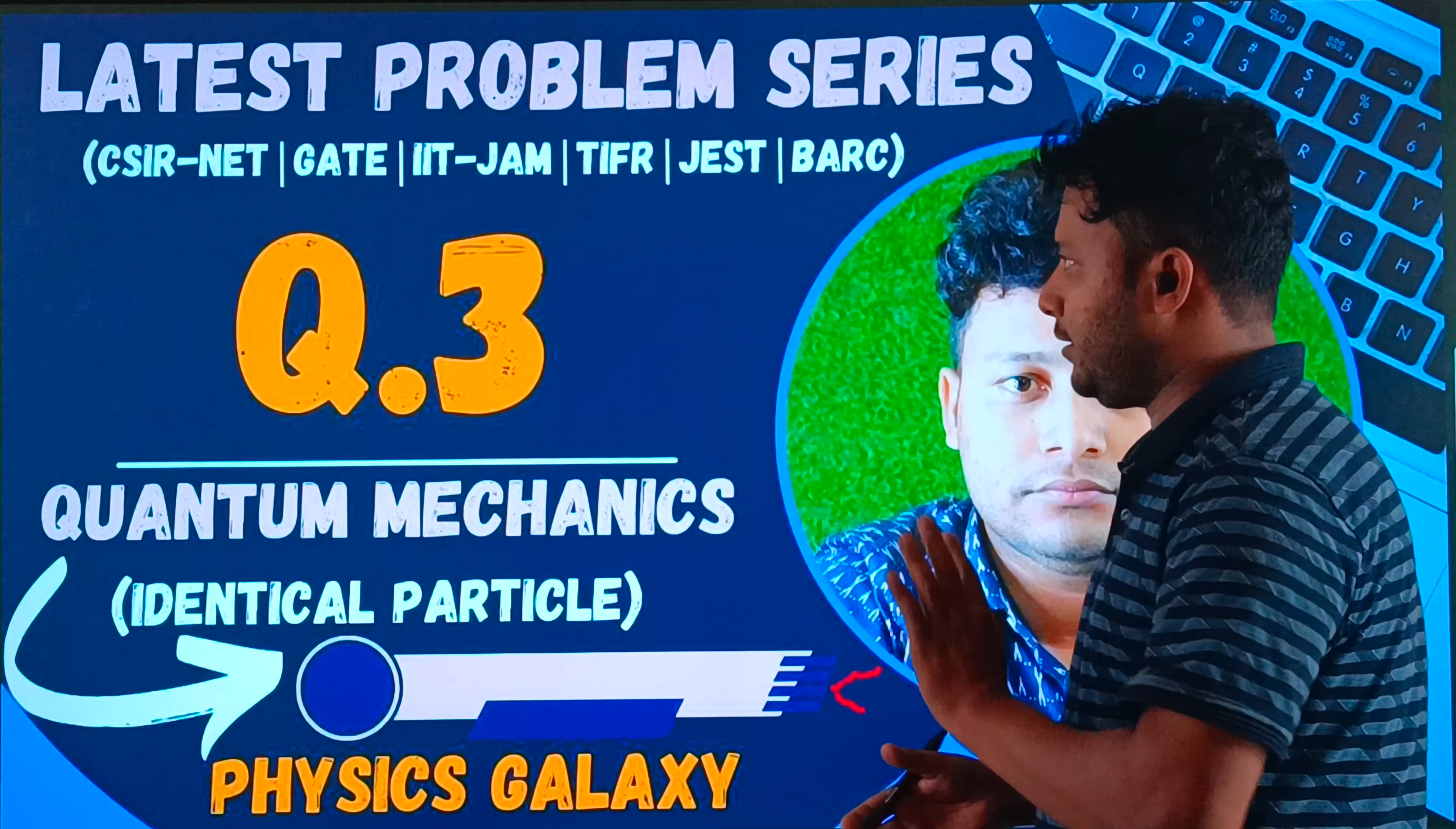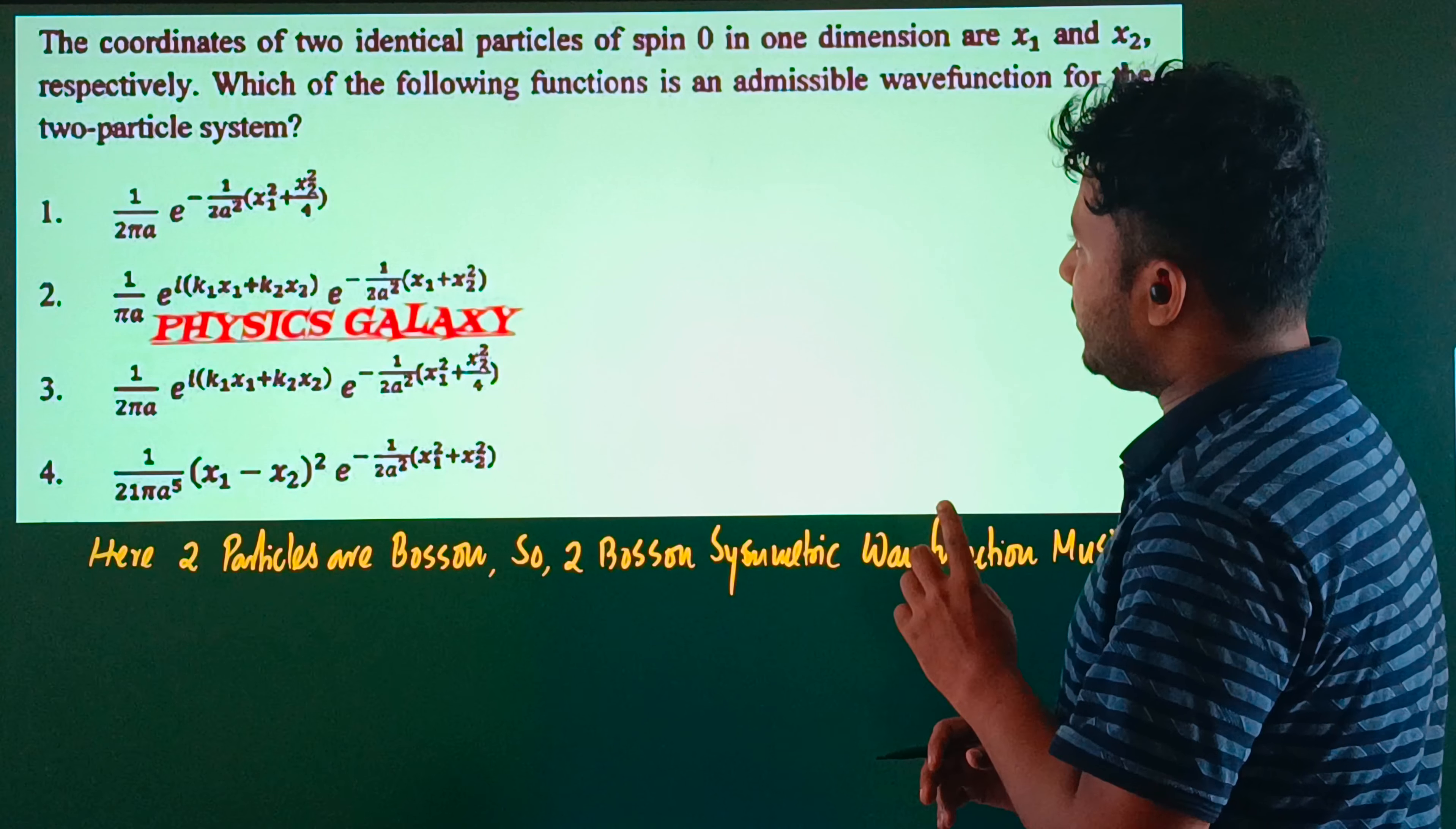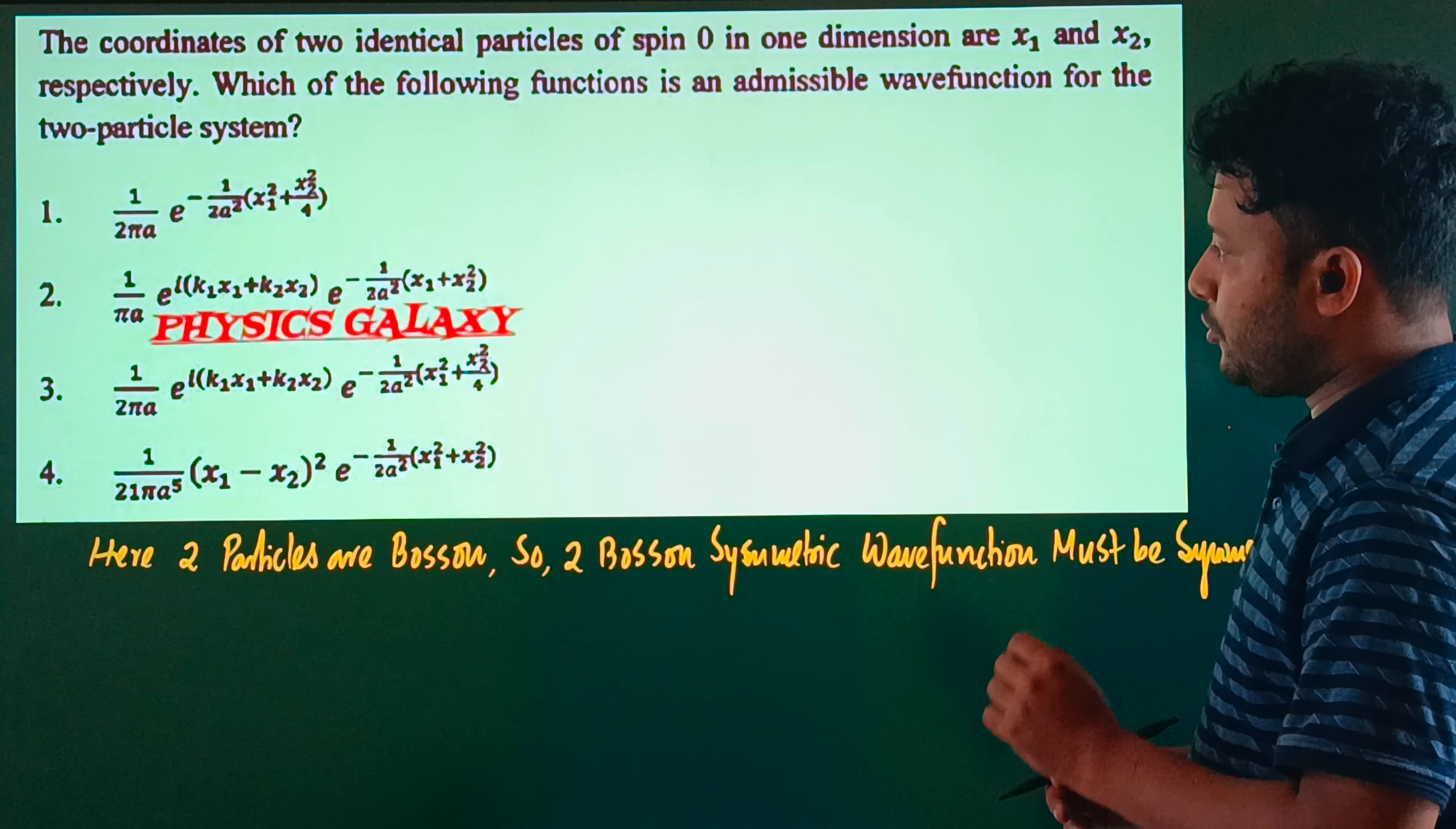Let's look at the question. The coordinates of two identical particles of spin 0 in one dimension are x1 and x2 respectively. Which of the following functions is an admissible wave function for the two-particle system?